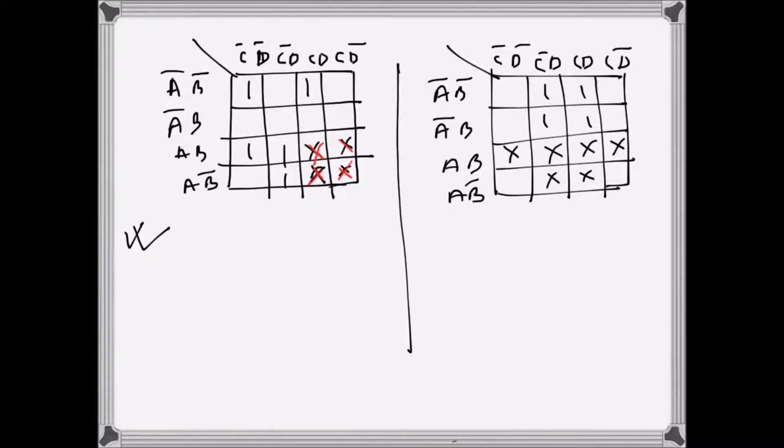So if I try to make groups, I can see that these two, this red and this one, if I make them both one, I have this group. This group becomes a big one.